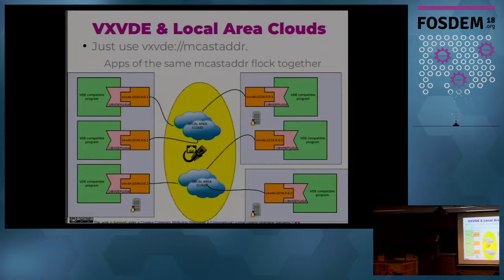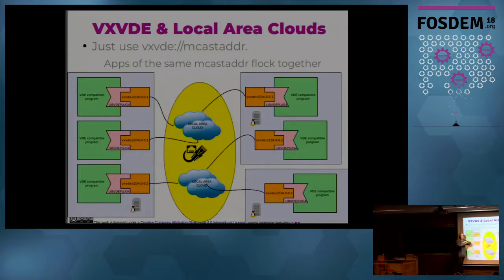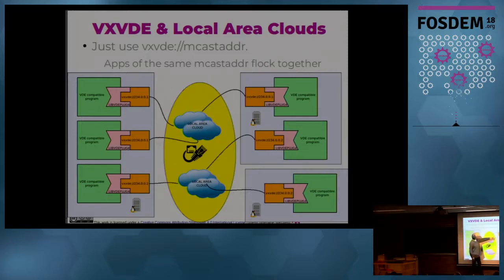VXVD is a very nice tool because it creates localized clouds. The best way to introduce the concept of VXVD is this sentence: apps with the same multicast address are connected to a virtual localized network. As soon as you give the same multicast address to some of them, they are connected to a virtual localized network — no infrastructure at all, zero configuration — and as I showed last year, it is as performant as VXLAN.